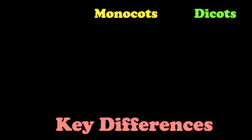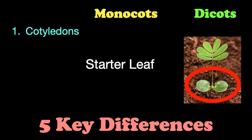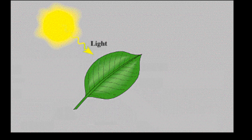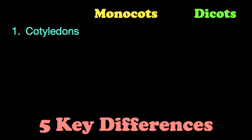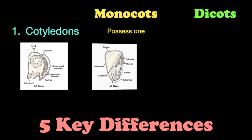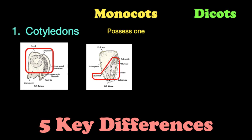Now we know what monocots and dicots are, so we can go over the five key differences between these two plant groups. The first is the number of cotyledons the plant seed possesses. A cotyledon is a starter leaf that develops inside the seed — without it, the plant will not be able to photosynthesize and produce enough energy to grow more leaves. Monocots, or monocotyledons, possess only one cotyledon, while the dicotyledon, or dicot, possesses two.